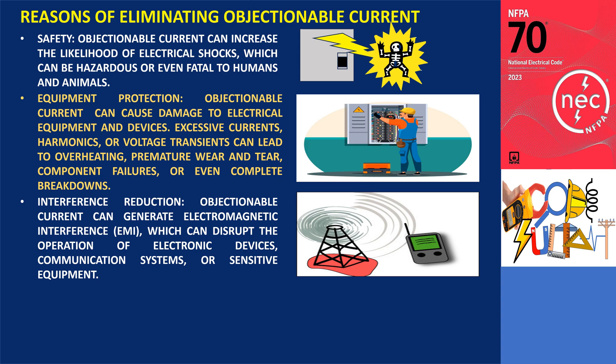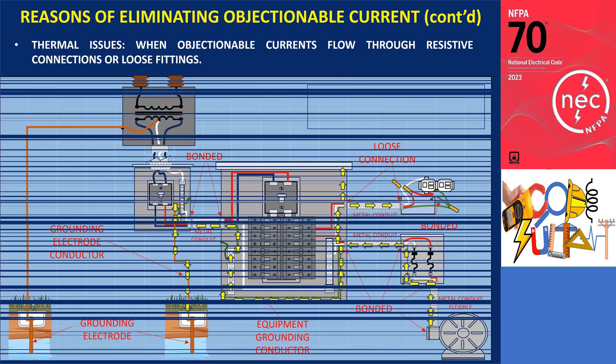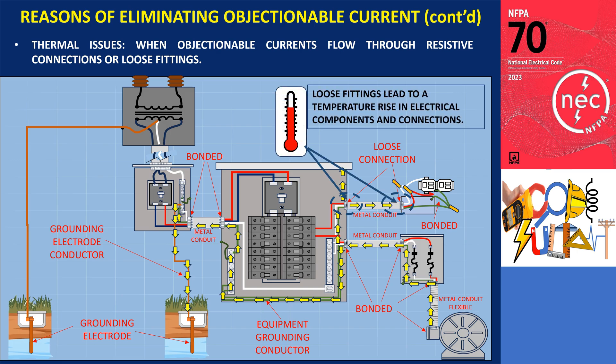Interference reduction: objectionable currents can generate electromagnetic interference, which can disrupt the operation of electronic devices, communication systems, or sensitive equipment. Prevention of nuisance tripping: objectionable currents can cause protective devices like circuit breakers or ground fault circuit interrupters to trip unexpectedly. Thermal issues: when objectionable currents flow through resistive connections or loose fittings, it can lead to a temperature rise in electrical components and connections.